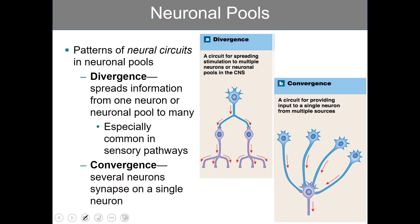Divergence spreads information from one neuron or neuronal pool to many. A single signal or action potential from one neuron can then be transmitted to many — that's divergence. In the opposite fashion, convergence is when several neurons synapse on a single neuron, so here you have four neurons all synapsing on one.